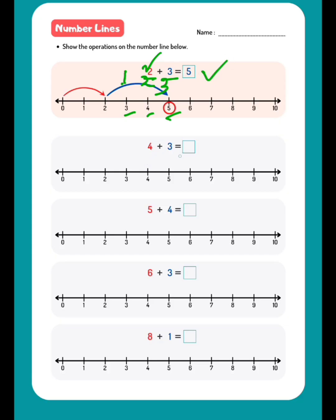Here it is written 4 plus 3. So first we need to go to 4. Then after 4 we are going 3 more steps: 1, 2, 3. So directly we will go to this. So 4 plus 3 equals 7.